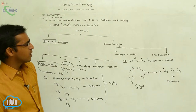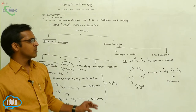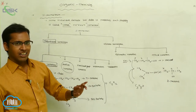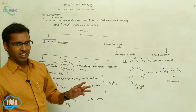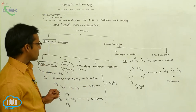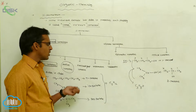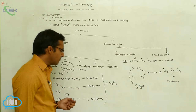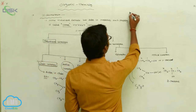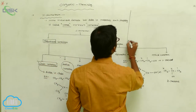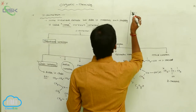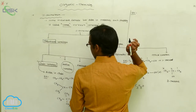Alcohols show two types of positional isomerism: primary alcohol, secondary alcohol, and tertiary alcohol. The next type is functional group isomerism. Functional group isomerism means compounds have the same molecular formula but differ in their functional group — only the functional group is different.